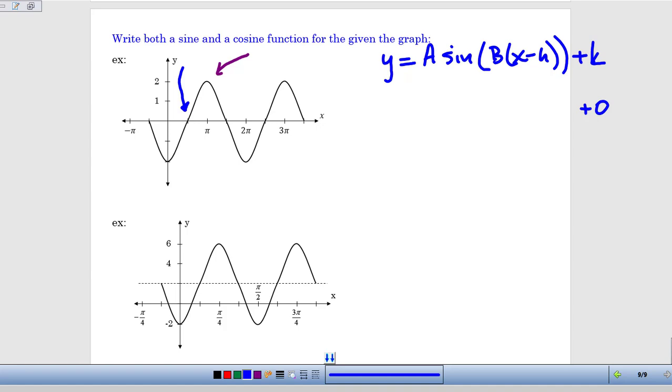We can see what the amplitude is. I can see that the graph bounces off of two and negative two, so I can put a two out in front there. And it's a positive two because from this spot right here, the graph is going up. So that's what we would expect from our standard sine curve.